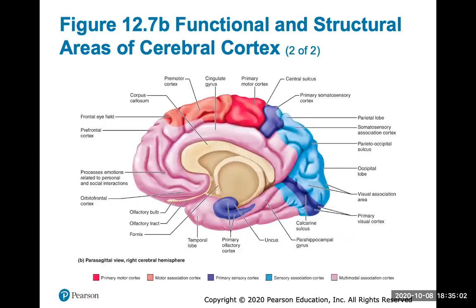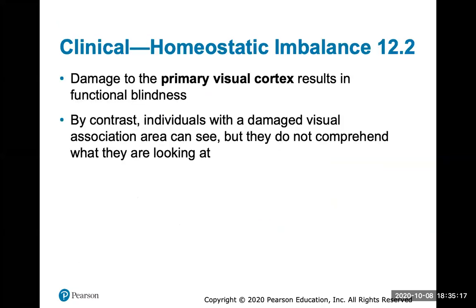This shows a medial sagittal view of the brain, showing where the olfactory cortex is located on the medial or inner aspect of the temporal lobe. Clinically, damage to the primary visual cortex will result in functional blindness. By contrast, individuals with a damaged visual association area will be able to see but not comprehend what they're looking at — for example, seeing a street sign but not understanding why it's important.